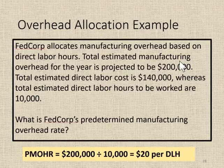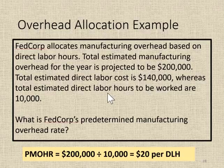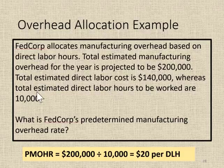We're going to take the total estimated overhead cost of $200,000 — and this particular company uses direct labor hours — so we're going to divide that by the estimated direct labor hours we anticipate working, which is 10,000. That gives us $20 per direct labor hour.